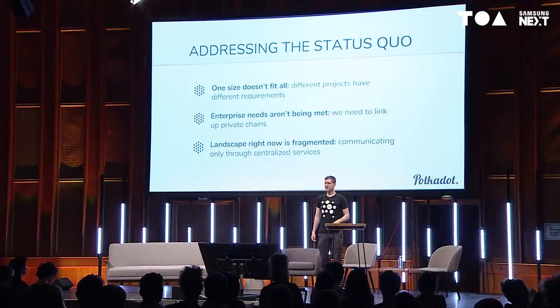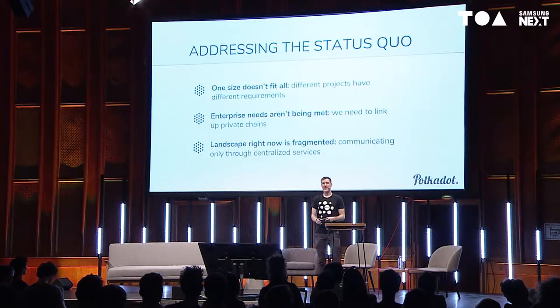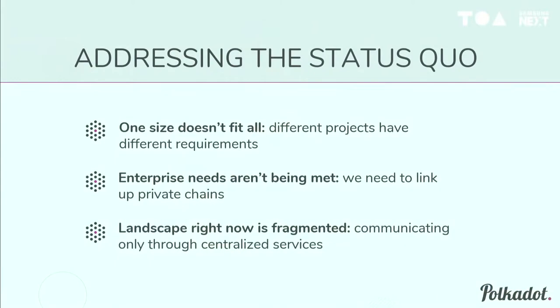Addressing the status quo: one size doesn't fit all when it comes to blockchain. Different projects have different requirements, and forcing everything to use a single mechanism for writing their state machine can be overly restrictive in terms of data formats or computation, slowing down throughput. Enterprise needs also aren't being met — private chains are usually reluctant to put their data on the public chain, at the mercy of public governance. They want to manage their own data but make it accessible.